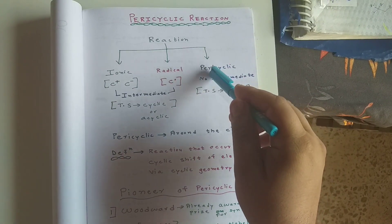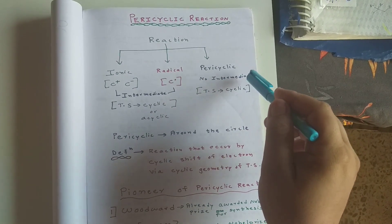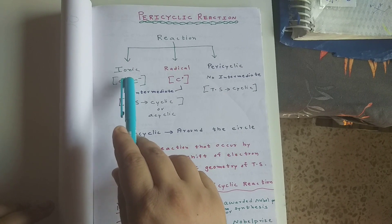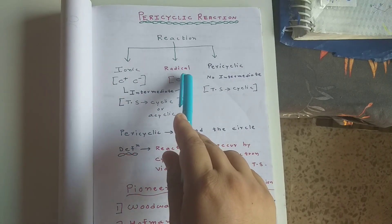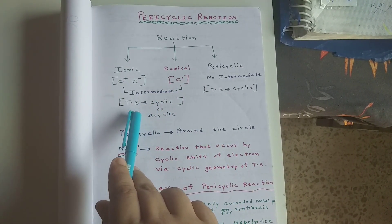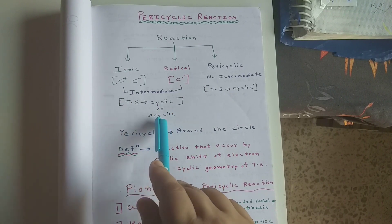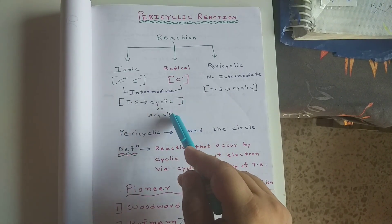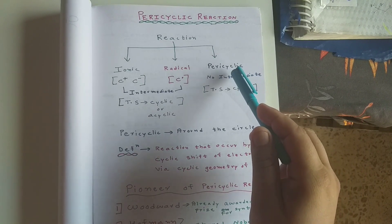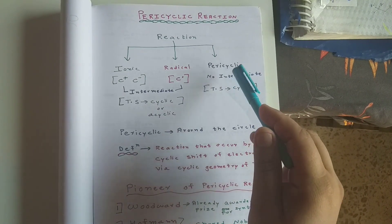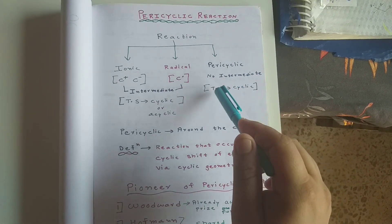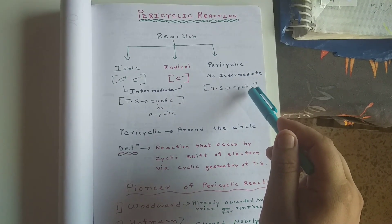In pericyclic reactions there are no intermediates. Whenever you have an ionic or radical intermediate, the transition state of that reaction might be cyclic or acyclic — both possibilities exist. But whenever we are discussing pericyclic reactions, always remember: there are no intermediates formed, and the transition state is always cyclic.